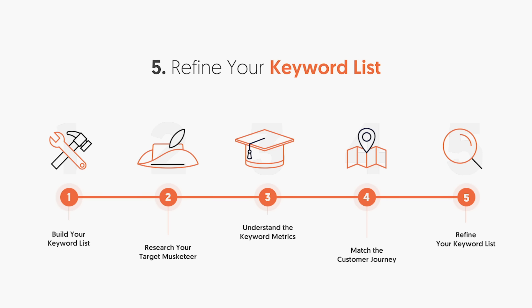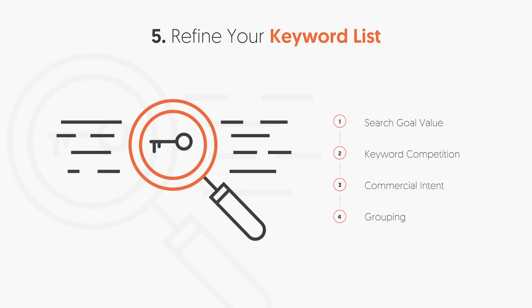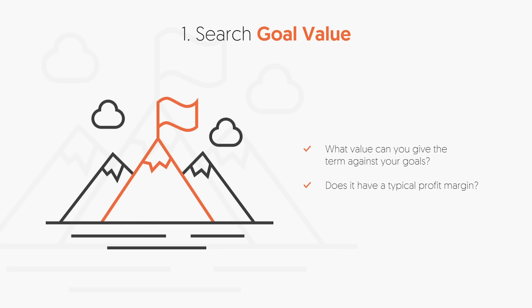The last step in keyword research is to refine your keyword list. You may have too many keywords to go after — some may be the right ones, some may be the wrong ones — so you need to refine through four simple steps. The first is search goal value: what value can you give the term against your goals? Do you think it's going to have high profit, generate sales or leads? Typically, if it has a higher CPC, you're going to get more value from that keyword. If it has a lower cost per click, you're not going to get as good of an ROI.